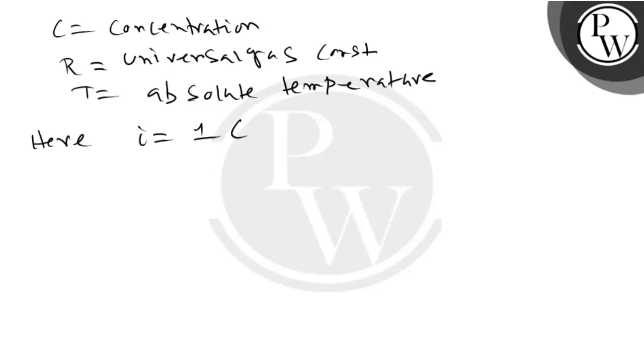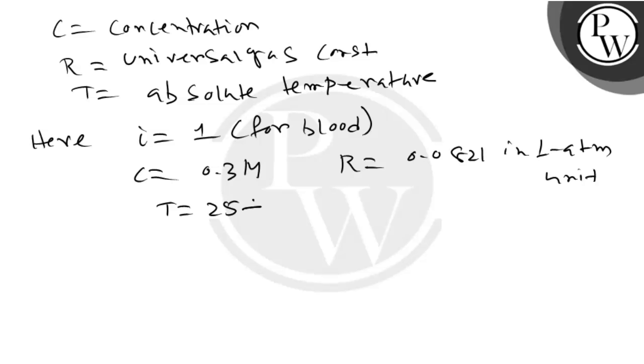Here, i equals 1 for blood, c equals 0.3 molar, r equals 0.0821 in litre atmosphere unit, and t equals 25 degrees Celsius plus 273, which equals 298 Kelvin.